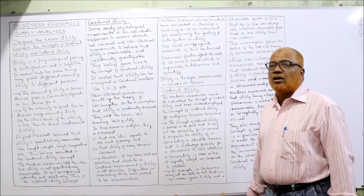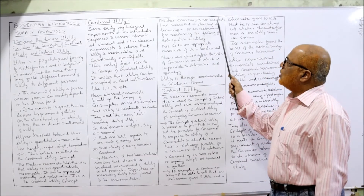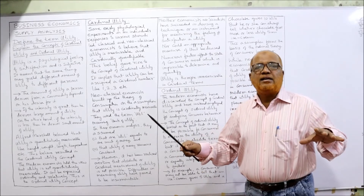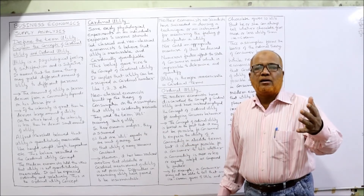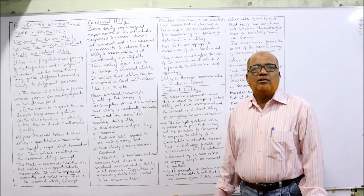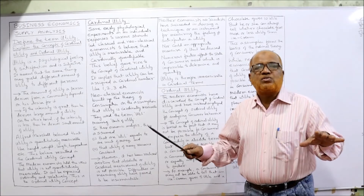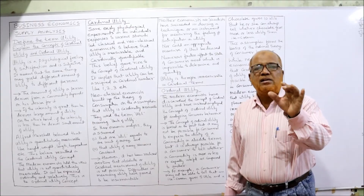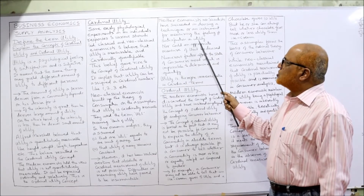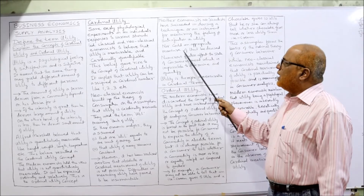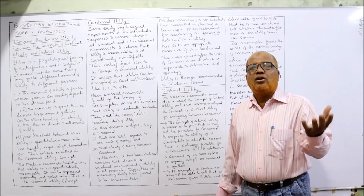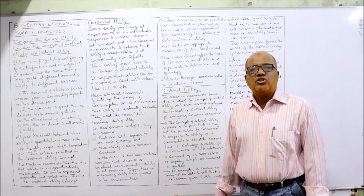Neither economists nor scientists have succeeded in devising any technique or instrument to measure utility. Scientists and economists have so far failed to calculate precisely how much satisfaction a person gets by consuming goods. No appropriate unit of measurement of utility could be devised — neither can we build an instrument nor is there a valid unit of measurement for utility.